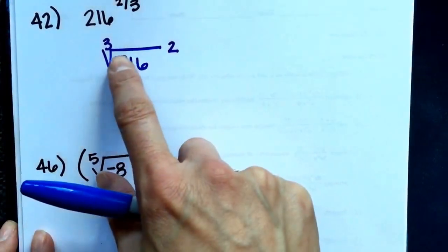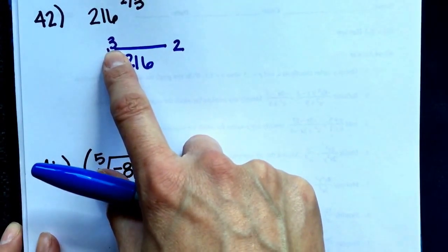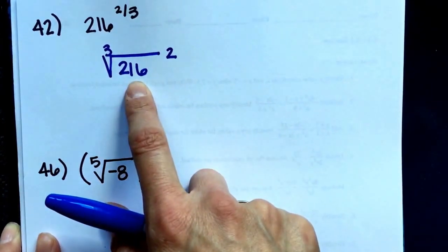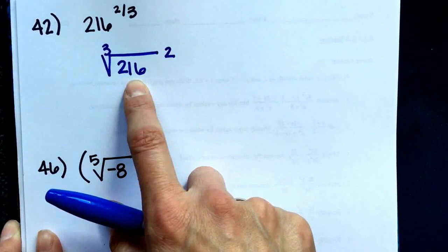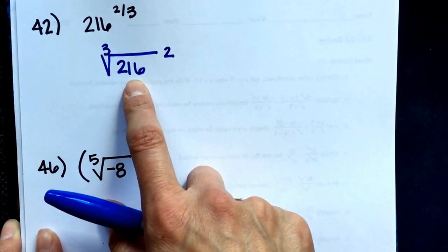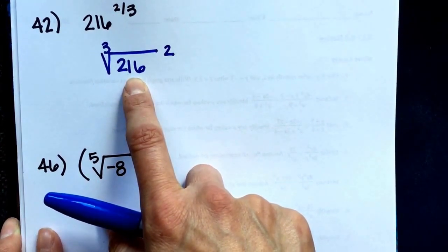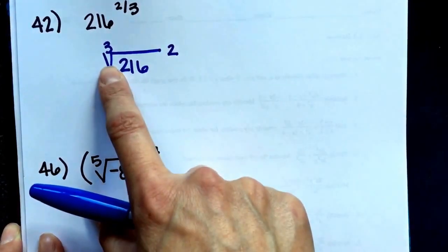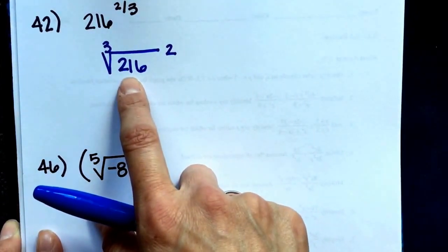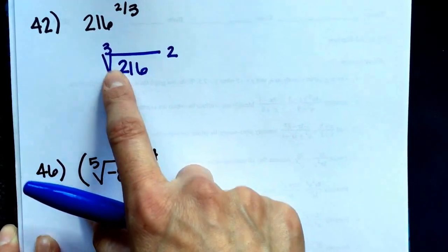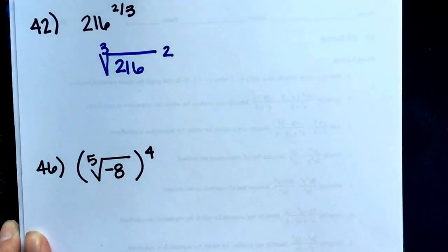It's easier to do if you take the root first. So a number that I can multiply three times to get 216. 216 is an even number, so if you're going to do guess and check, start with some evens like 2 and 4. 2 times 2 times 2 is 8, that's not nearly big enough. 4 times 4 times 4 is 64, still doesn't work.